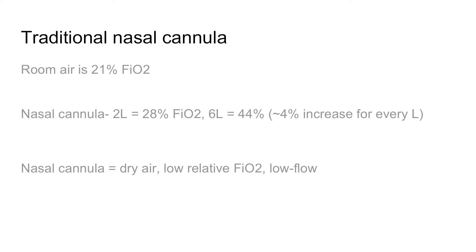So traditional nasal cannula, or low flow, in terms of FiO2 and flow rate: room air is 21% FiO2. Nasal cannula at 2 liters is about 28% FiO2. Going up to 6 liters — how often do you have somebody on 6 liters nasal cannula? You really don't — it's about 44%. You go up by about 4% for every liter of flow. But the problem with nasal cannula is it's really dry, low relative FiO2, and low flow. You're really only putting it on someone that needs a little oxygen; you can't really use it to reverse any processes.